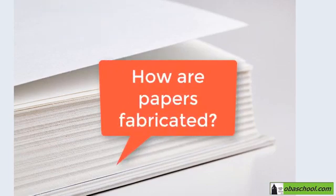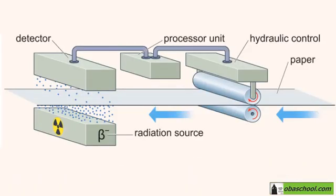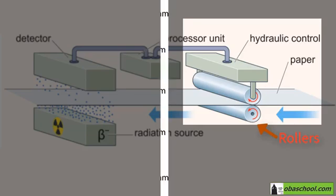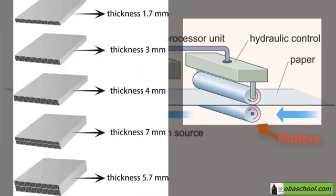So how are papers fabricated? Let's check. Paper is made by squeezing wood pulp between rollers. Paper can be made in different thicknesses and the rollers need to squeeze the wood pulp with a force that produces the correct thickness of paper.